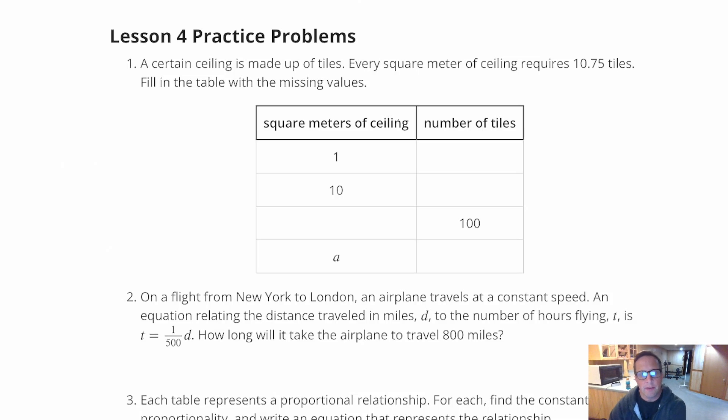Okay, moving on to Lesson 4, Practice Problems. For number 1, it says a certain ceiling is made up of tiles. Every square meter of the ceiling requires 10.75 tiles, 10 and 75 hundredths tiles. So it's a number between 10 and 11, closer to 11, but greater than 10. Fill in the table with the missing values.